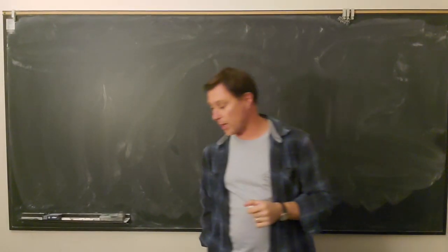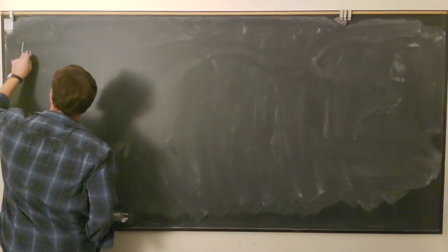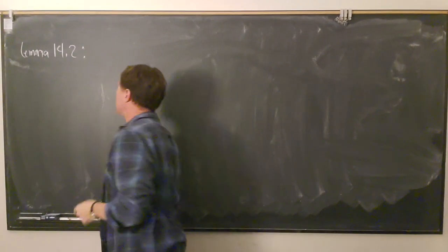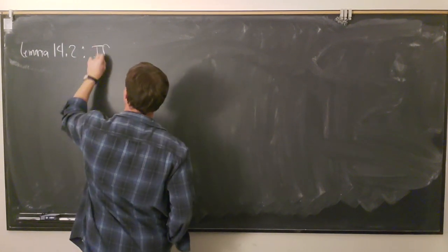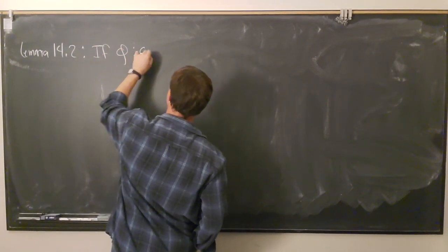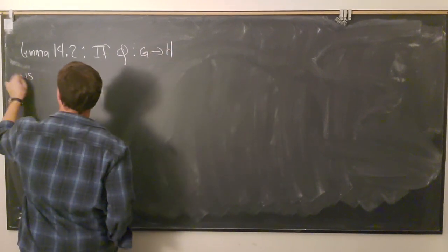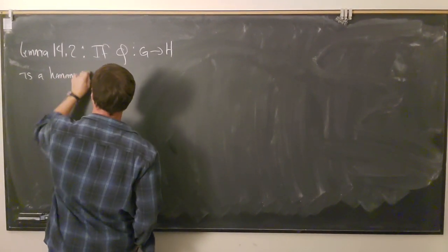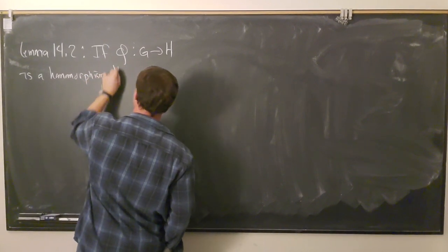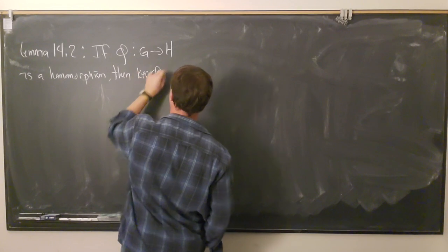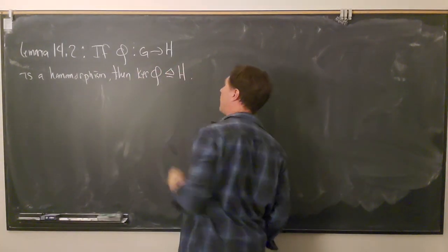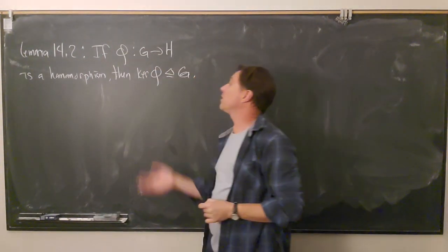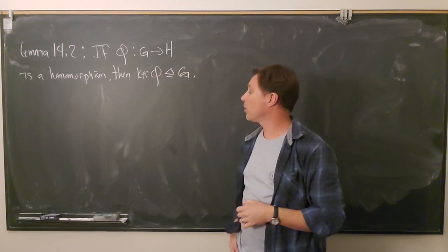Hey everyone, let's continue our discussion of normal subgroups. Our next result is going to be an application of the normal subgroup test. We'll call this Lemma 14.2, and it goes like this: if phi from G to H is a homomorphism, then the kernel of phi is a normal subgroup of G. So what this tells us is the kernel of a homomorphism is always a normal subgroup of its domain.